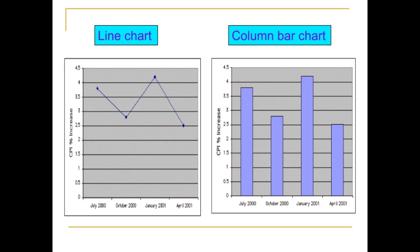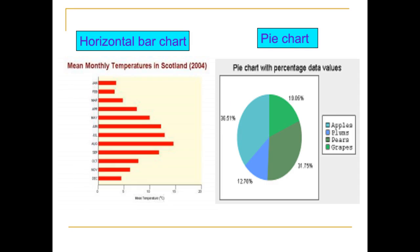Column charts are used to compare values across categories by using vertical bars. In the example, the CPI can also be presented in a column chart. Instead of a continuous line, vertical bars are used to graph the data.